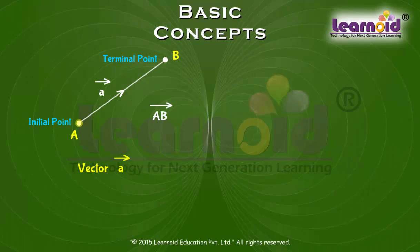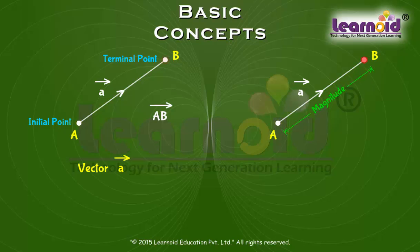The length of line segment between initial and terminal points of a vector is called the magnitude of the vector and is denoted as absolute AB or absolute of a vector or simply A without arrow.